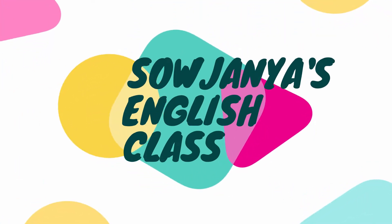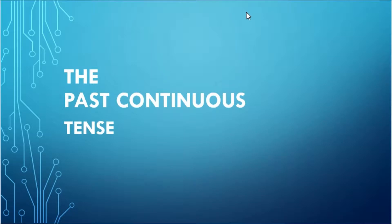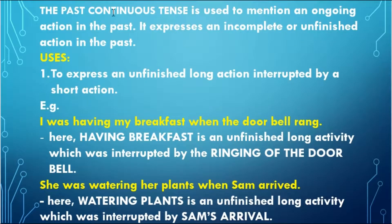There are many things to learn, so stay focused. Let us start today's session. The past continuous tense is used to mention an ongoing action in the past — a continuing action. It expresses an incomplete or unfinished action in the past.